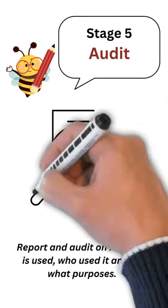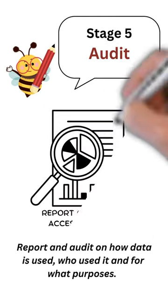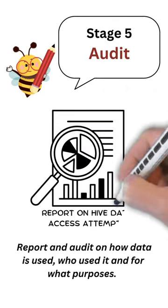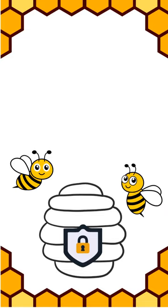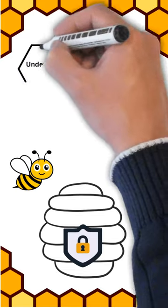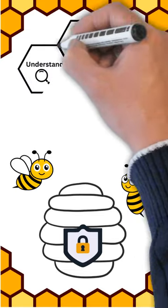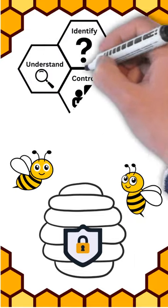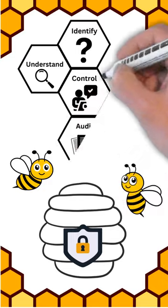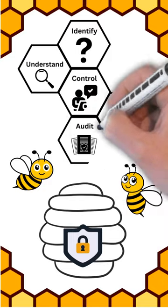Stage 4: Protect. Implement policies to enforce and prevent unauthorized access. Stage 5: Report and audit on how data is used, who used it, and for what purposes. Together, these elements help an organization like the bee colony secure its sensitive data, defend against data loss, and detect suspicious activity.